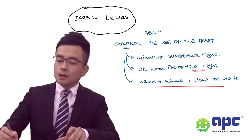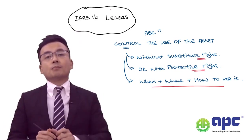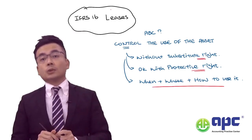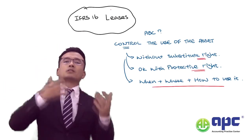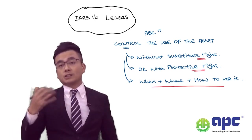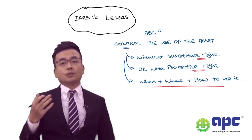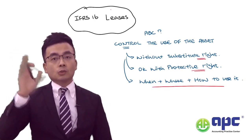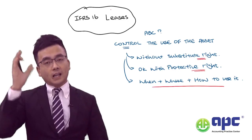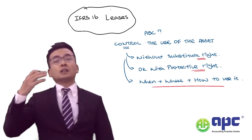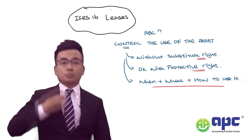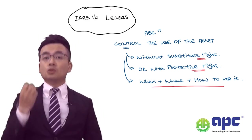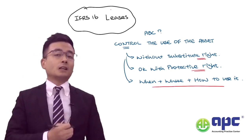However, if XYZ Power has a substitute right — for example, if XYZ leases us a car but can require us to return that car whenever they want — then the lessor has the right to substitute the asset with another one. In that case, the arrangement does not contain a lease.